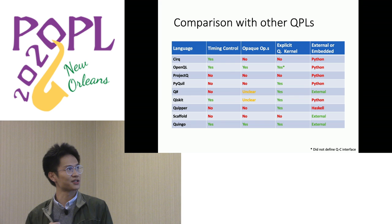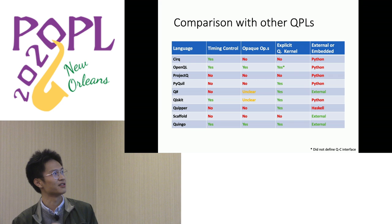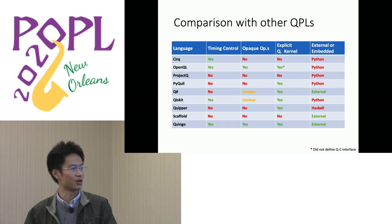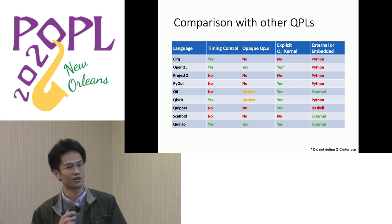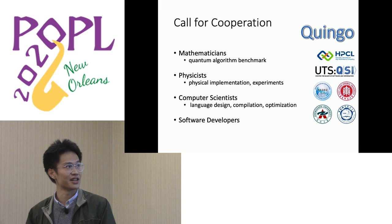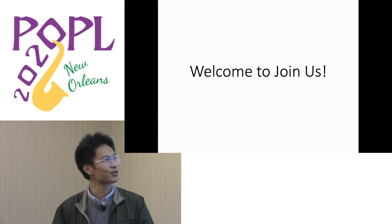We conducted a survey of existing quantum programming languages, focusing on their ability to provide explicit timing control, opaque operations, an explicit quantum kernel concept, and whether they are embedded or external languages. To the best of our knowledge, Quingo is the only external programming language that supports timing control and opaque operations with an explicit quantum kernel concept. Quingo is still under development at an early stage, and we seek broader cooperation with experts of various backgrounds.